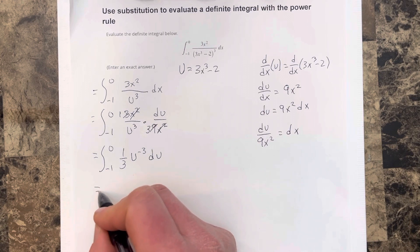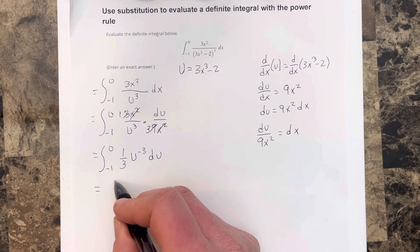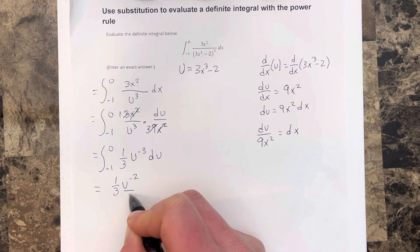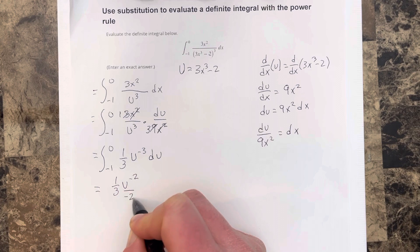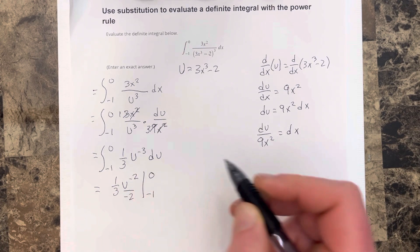Then I'm going to actually do the integration here. So I'll do the anti-derivative of this, and that would be 1 third u to the negative 2 over negative 2. We're adding 1 to the power and then dividing by it, and then we're going to evaluate that from negative 1 to 0.